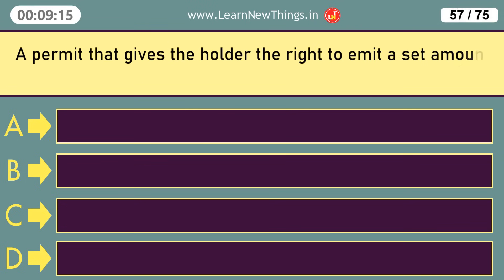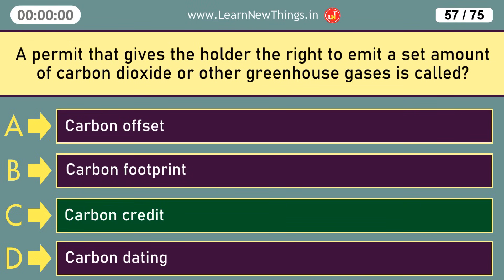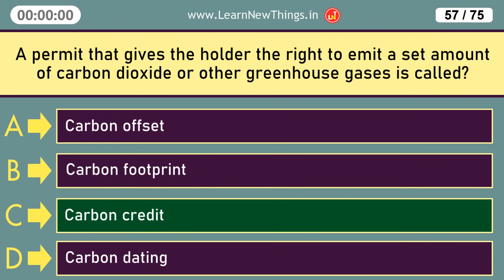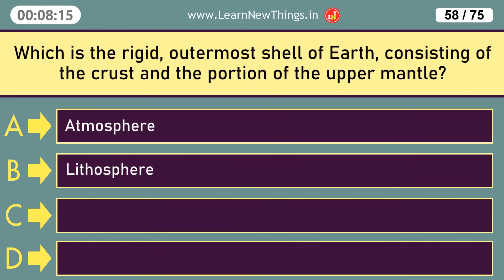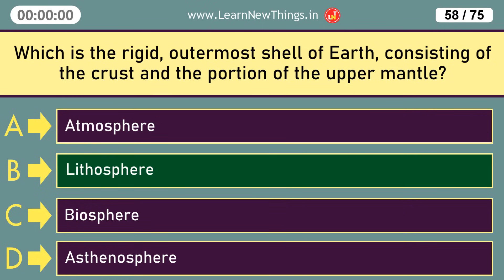A permit that gives the holder the right to emit a set amount of carbon dioxide or other greenhouse gases is called a Carbon Credit. Which is the rigid outermost shell of earth consisting of the crust and the portion of the upper mantle? Lithosphere.